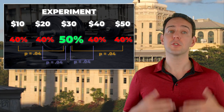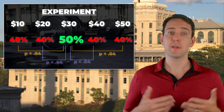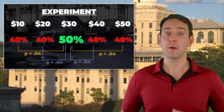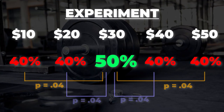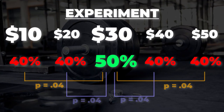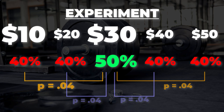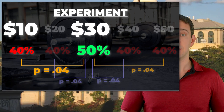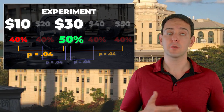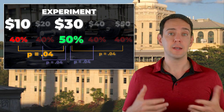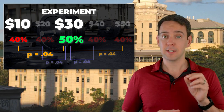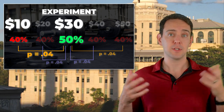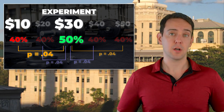And yet, if the researchers choose to p-hack, they just might be able to write and publish a paper showing that higher financial incentives encourage people to work out more. All they would have to do is show that when they compare $10 to $30, you find a statistically significant result — and then just not report the other three conditions. In the published paper, they would just compare those two conditions and call it a day. Without manipulating or faking any data, that key result — $10 versus $30 — does come back with a p-value of 0.04, which is below the conventional cutoff of 0.05.